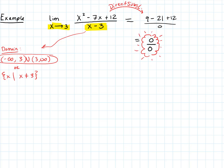This 0 over 0 result, throughout calculus, is going to mean there's some kind of interesting behavior. Whatever context we're looking at it in, that particular expression 0 over 0 — obtained by direct substitution — means there's some interesting behavior. It means that the numerator and denominator both have a root at that point.